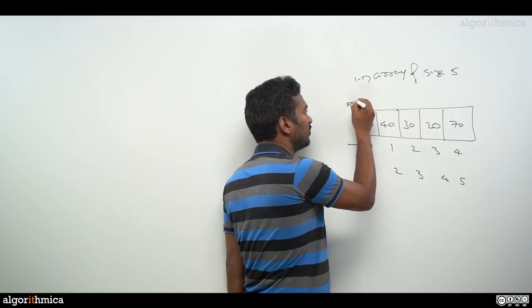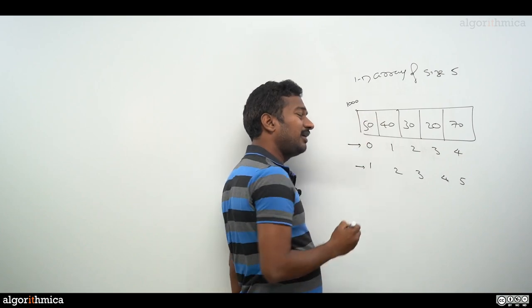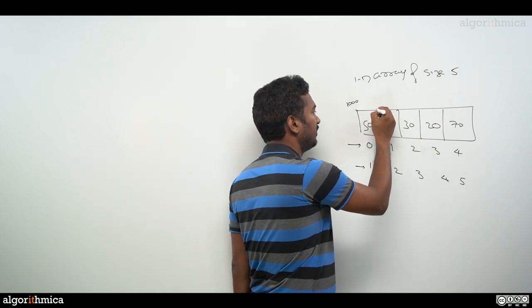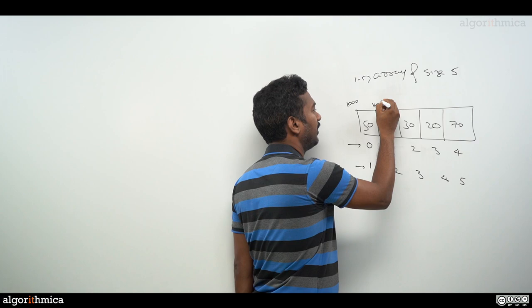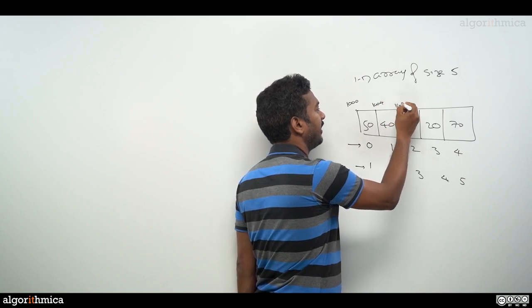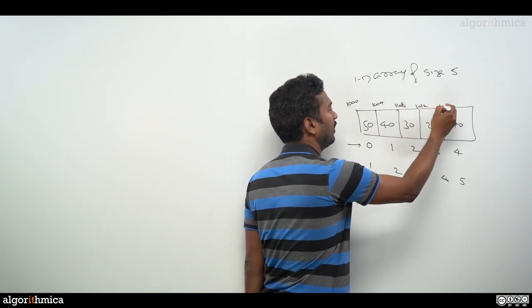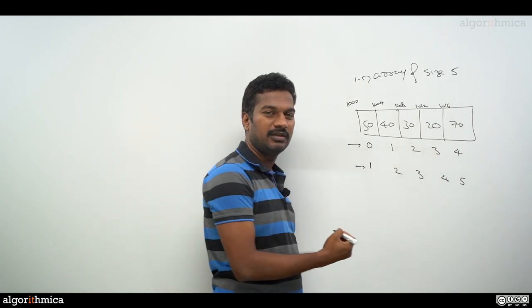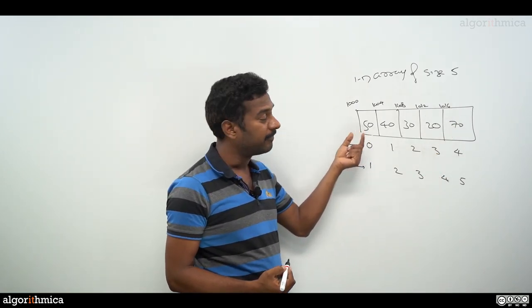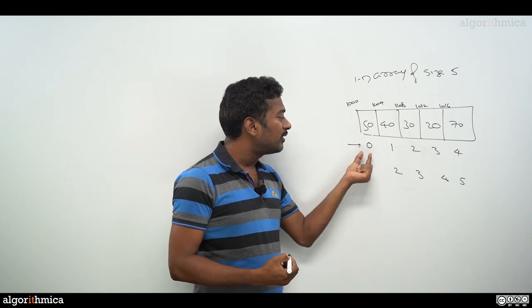Let me assume the starting address is 1000 here, and an integer size is 4 bytes. Then this element is at 1004, this is 1008, 1012, and 1016. That is the starting address of each element in memory.